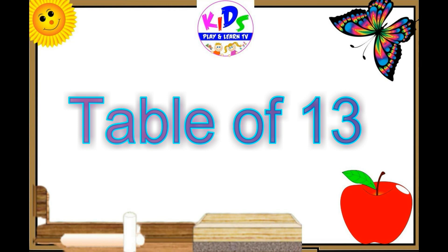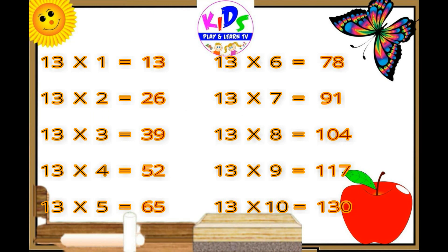Hey kids, let's repeat. 13 ones are 13. 13 twos are 26. 13 threes are 39. 13 fours are 52. 13 fives are 65. 13 sixes are 78. 13 sevens are 91. 13 eights are 104. 13 nines are 117.